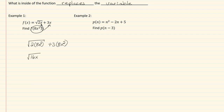So now I have two times eight inside my radical, which would give me 16x², and then three times eight, which would give me 24x². Here we can simplify what's inside the radical by taking the square root of sixteen, which would give me four. Square root of x² would give me x, and then we would just still have the 24x². No like terms, and we're done.